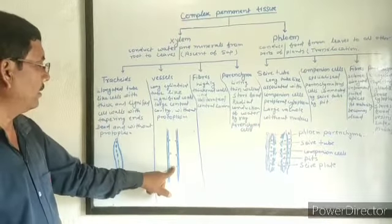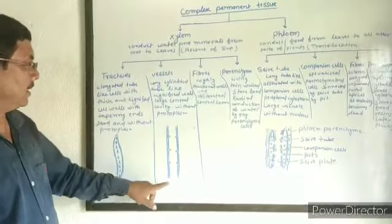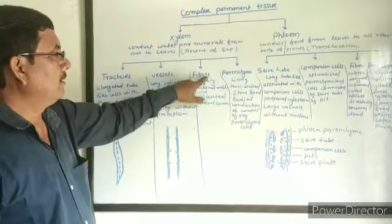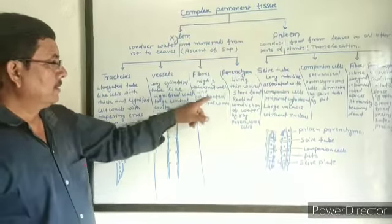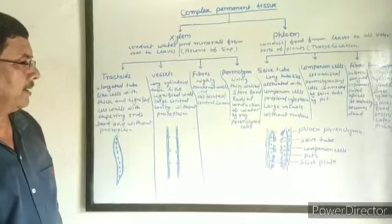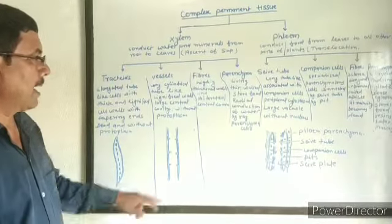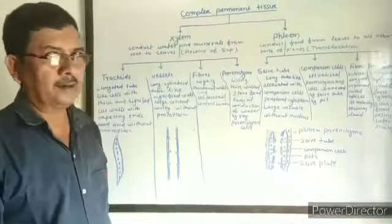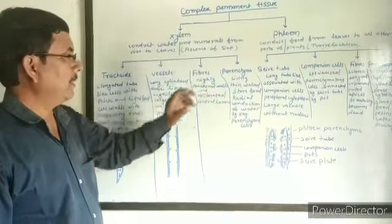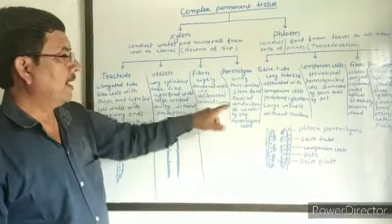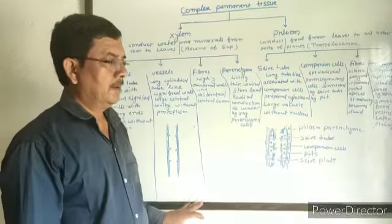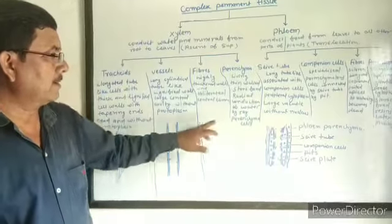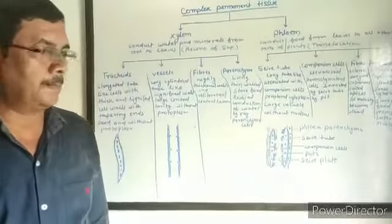Tracheids and vessels are the main conducting elements of xylem. The next xylem element is fiber. Fibers are made up of cells with highly thickened walls and an obliterated central lumen. The fourth xylem element is xylem parenchyma. These three elements are non-living, but xylem parenchyma is made up of living cells. They have thin cells and store food in the form of starch and other substances. They also conduct water and minerals — radial conduction of water by ray parenchyma cells.